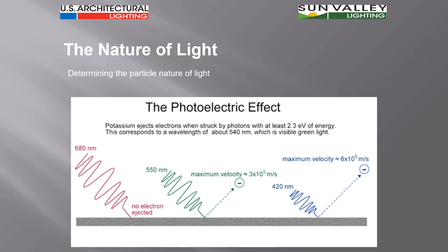Let's take the element potassium. If we take potassium and strike it with light and we use a waveform of light that is below 540 nanometers, nothing happens.